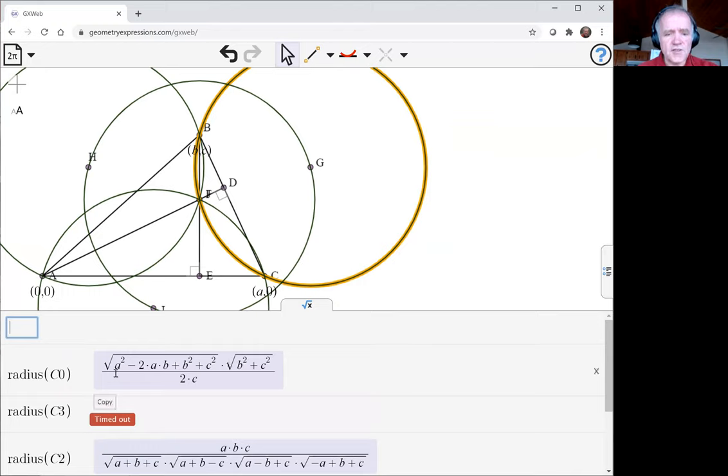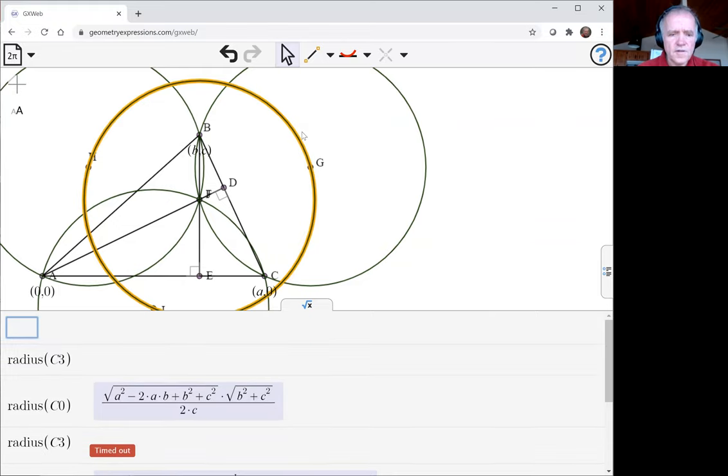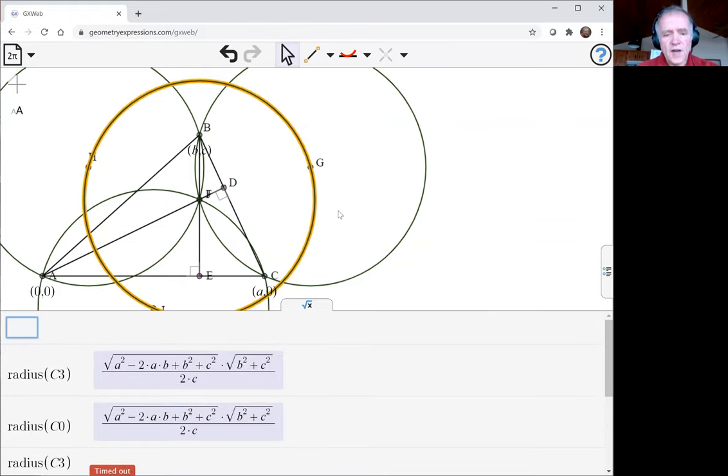So there, in this case, is the radius of the original circle, of one of the original circumcircles. And then I want the radius of this one here.